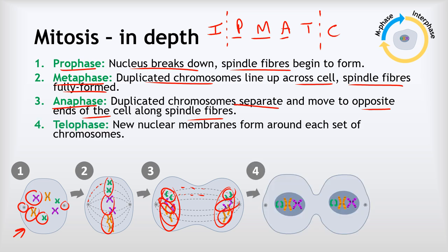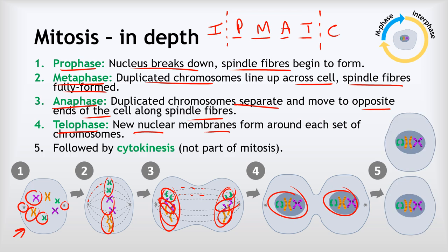The T in IPMATC stands for telophase. During telophase, a new nuclear membrane forms around each set of chromosomes, creating two nuclei in what is still technically one cell. This is the formal end of mitosis. After telophase comes cytokinesis — the cytoplasm pinches in the middle and fully completes the split, resulting in two entirely separate cells.